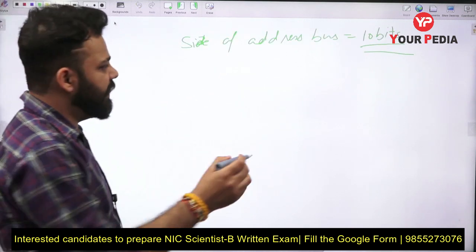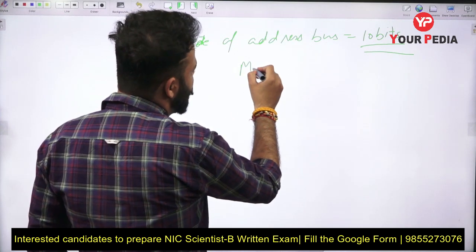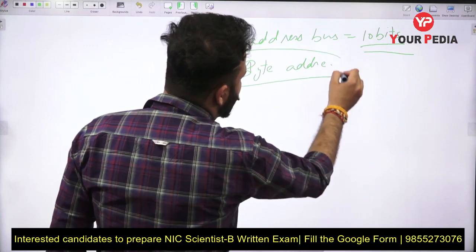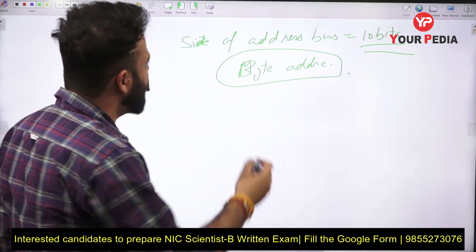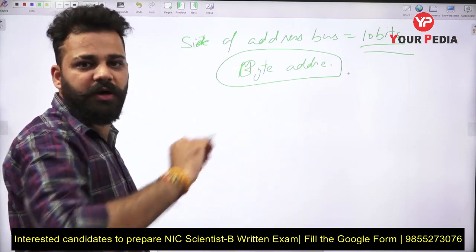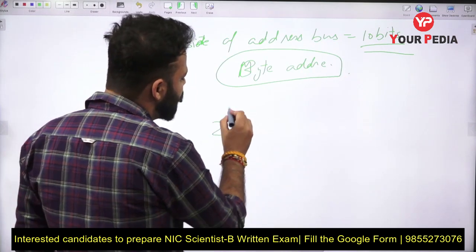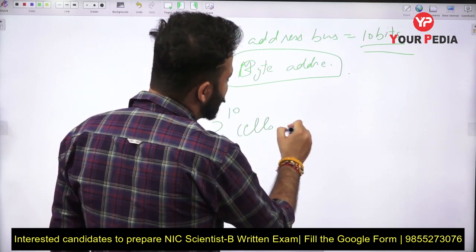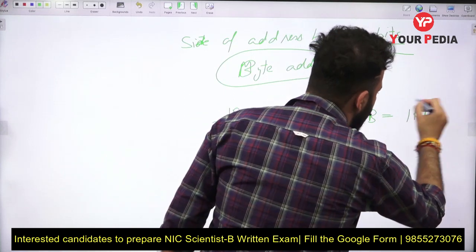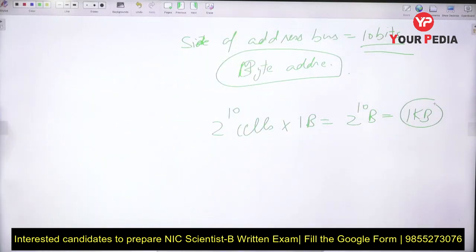If the address bus is 10 bits and memory is byte addressable, cell size is 1 byte. So when you put this into a decoder it gives you 2 raised to power 10 cells, and each cell size is 1 byte, so memory equals 2 raised to power 10 bytes, which is equal to 1 KB. These are pretty straightforward questions they can ask you.